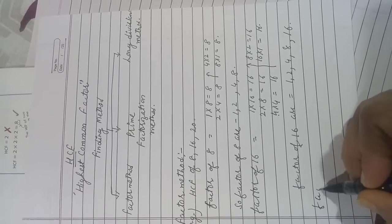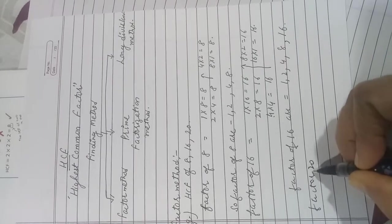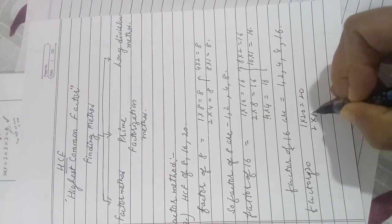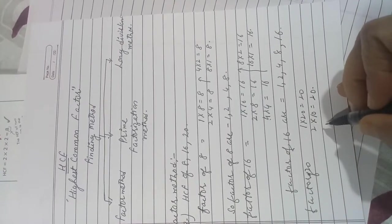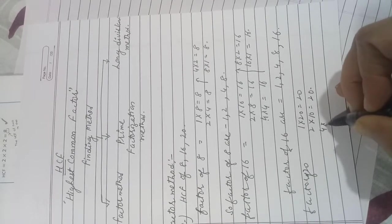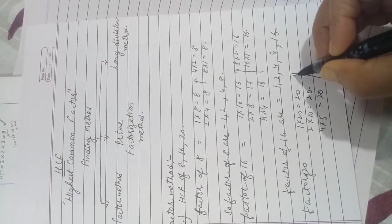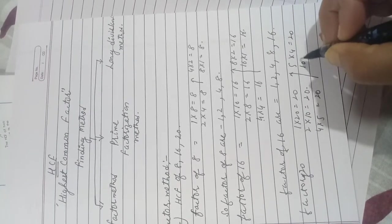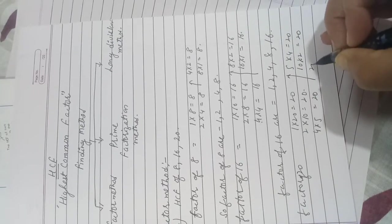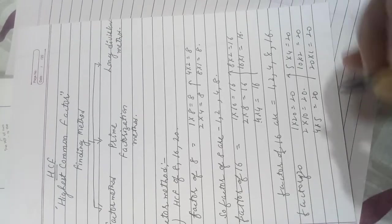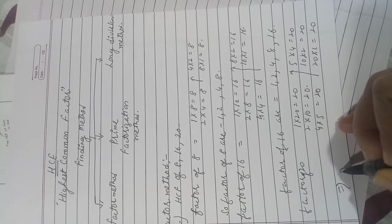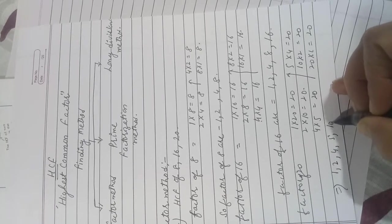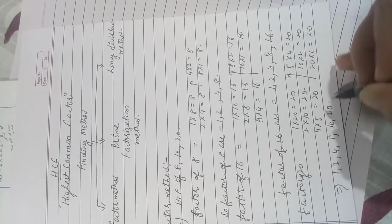In the same way, the factors of 20: 1 × 20 = 20, 2 × 10 = 20, 4 × 5 = 20, 5 × 4 = 20, and 10 × 2 = 20. So the factors of 20 are 1, 2, 4, 5, 10, and 20.